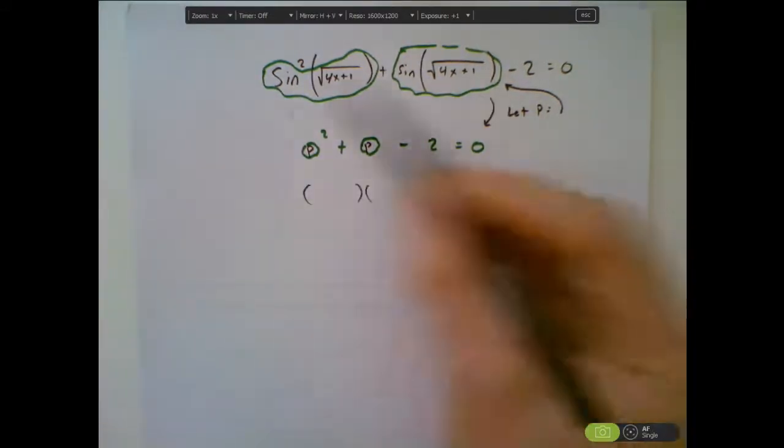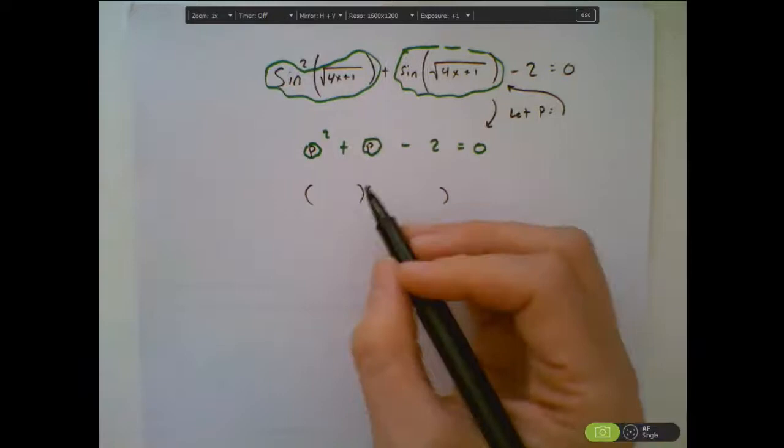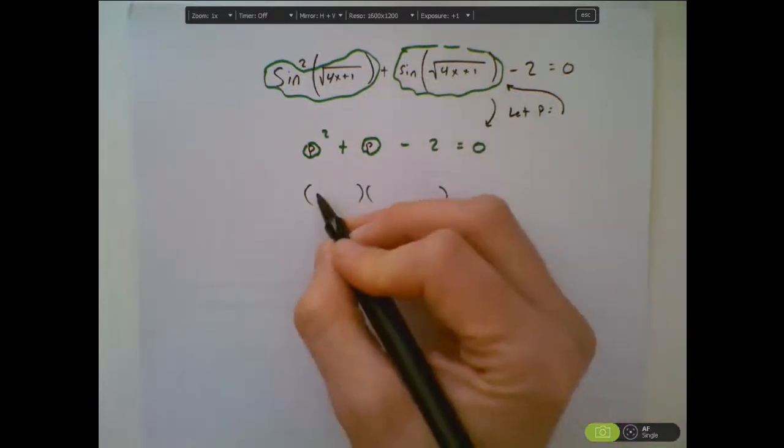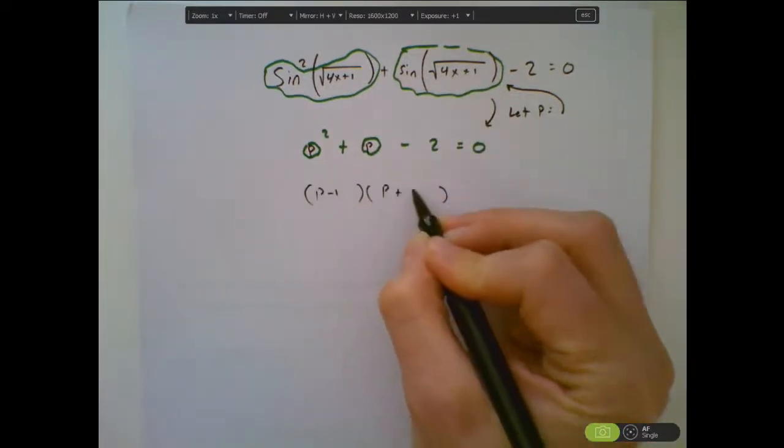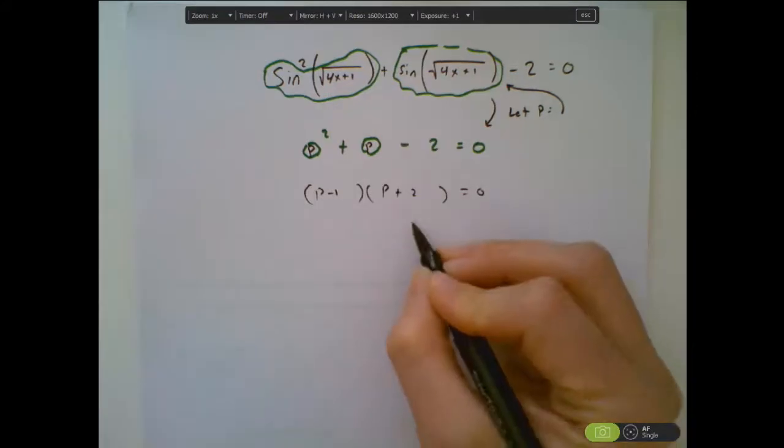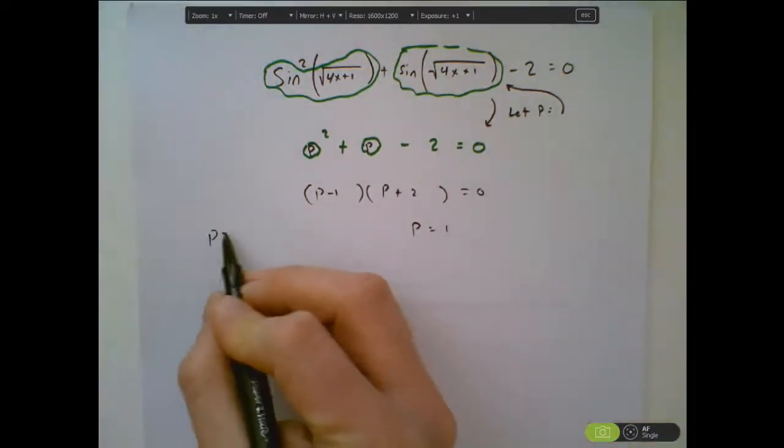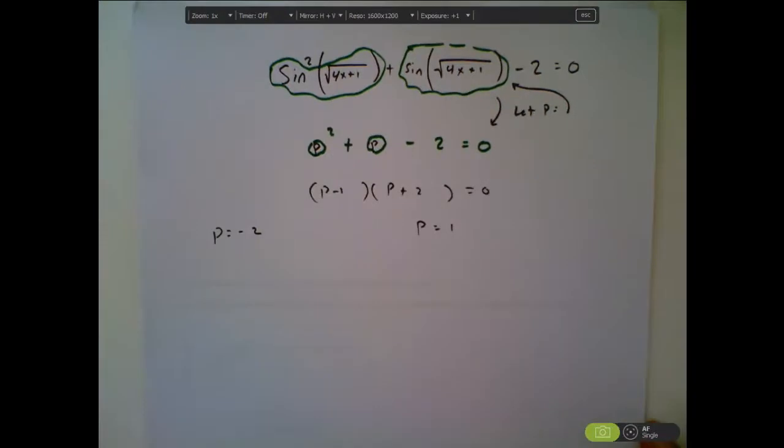And then you can say p squared plus p minus two because they feel uncomfortable factoring blob. Either way, the point is this repeated structure you can define away and now it's easy to factor.